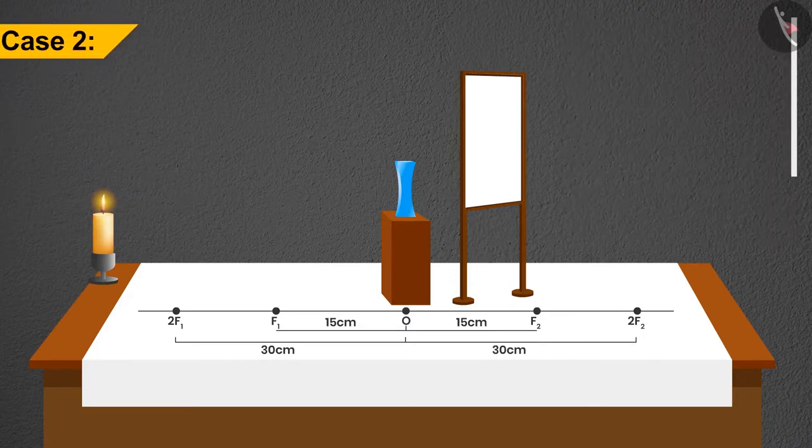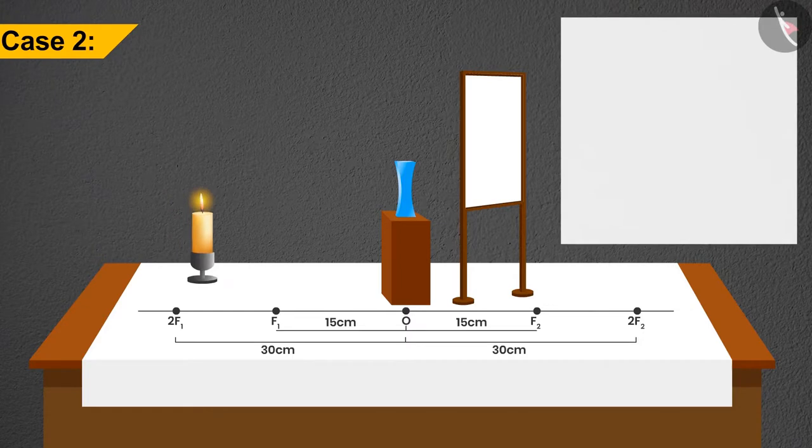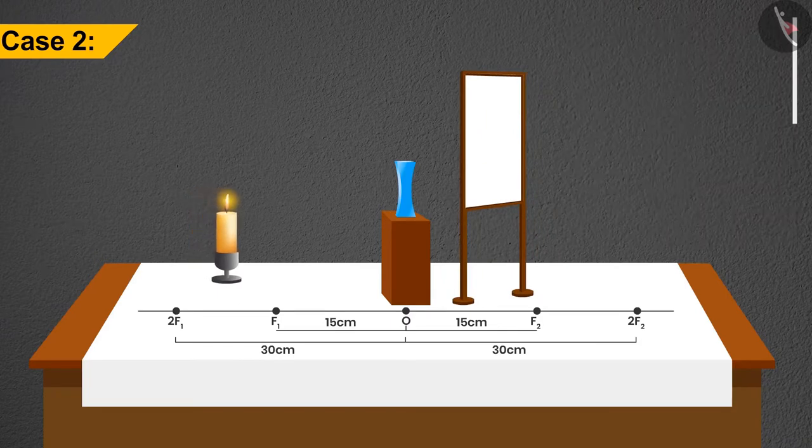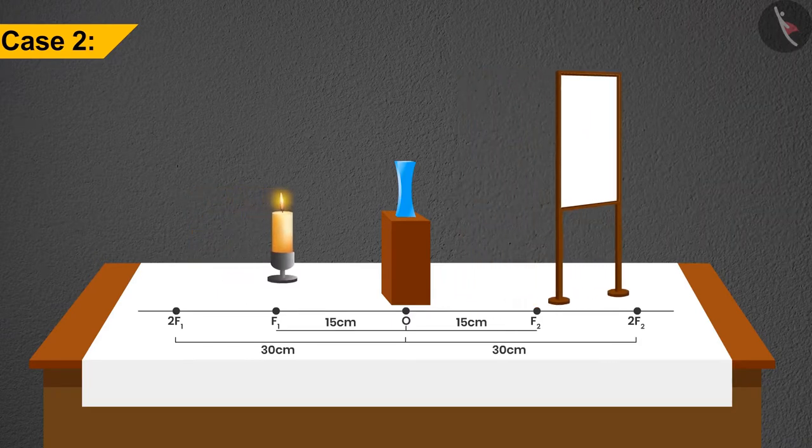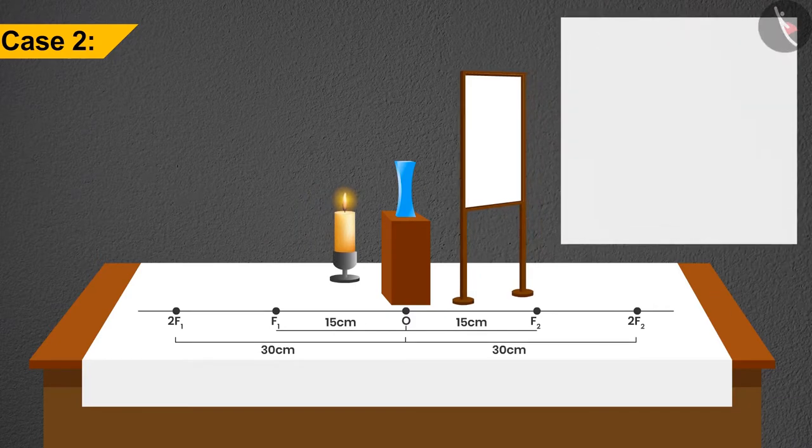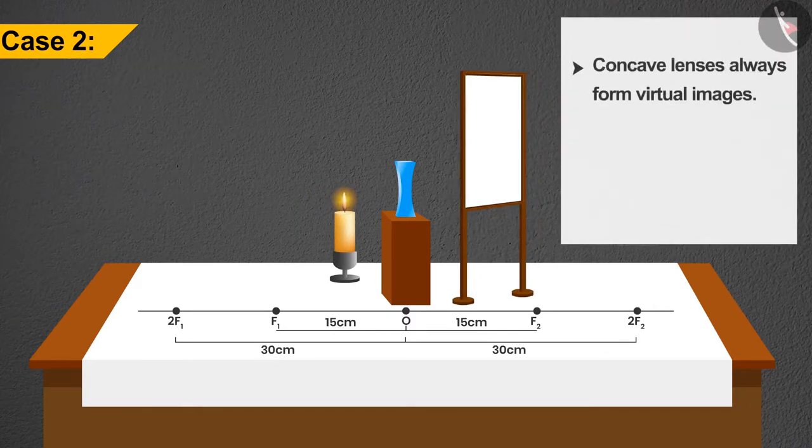In the second case, if we bring the candle a little closer from infinity, what will happen? We will not see any image on the screen. Then slowly bring the candle closer to O. Even then nothing is visible on the screen.